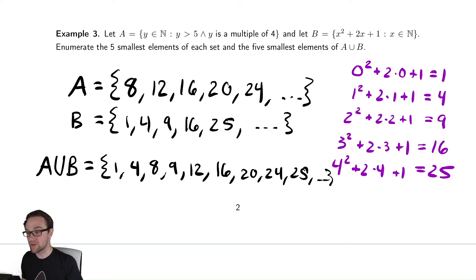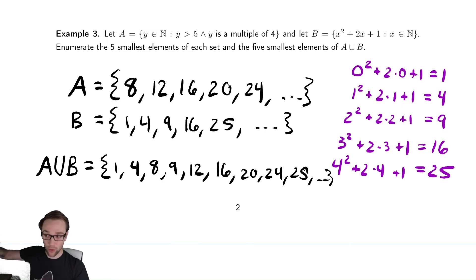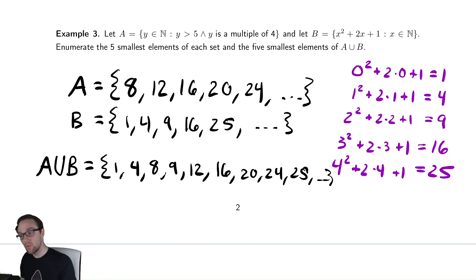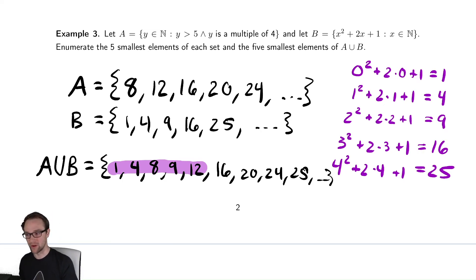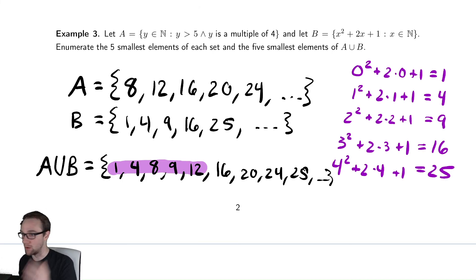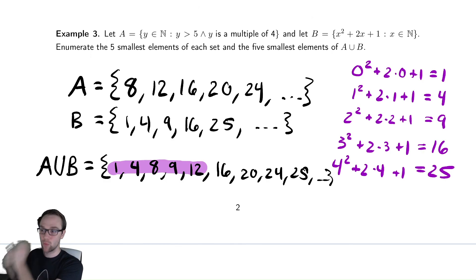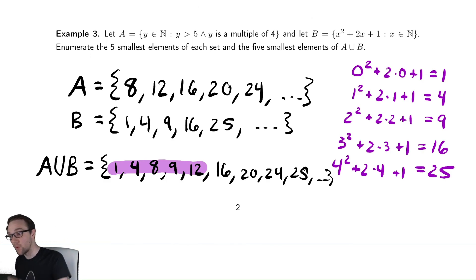The order doesn't matter though. I could have theoretically written that as 16, 4, 8, 25, 24 — the order does not matter. However, we were asked for the 5 smallest elements, which are 1, 4, 8, 9, and 12. I wrote it in ascending order to make sure I included everything I needed to. The order does not matter as a property of sets, but this problem asked for the smallest numbers, so I did care about order in that sense.